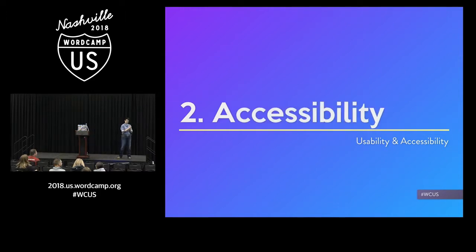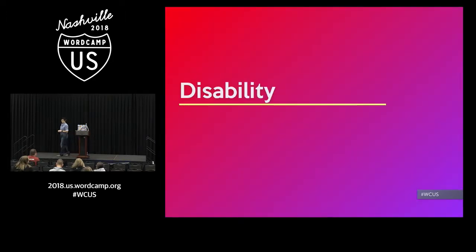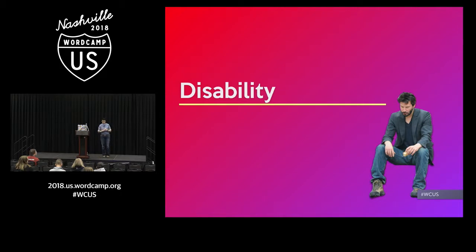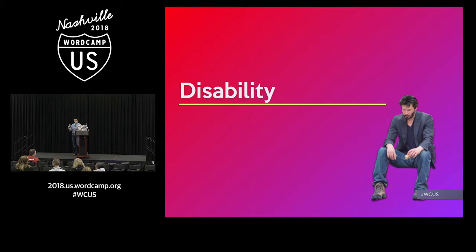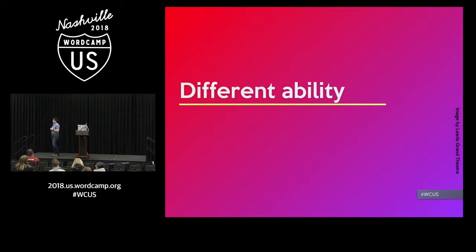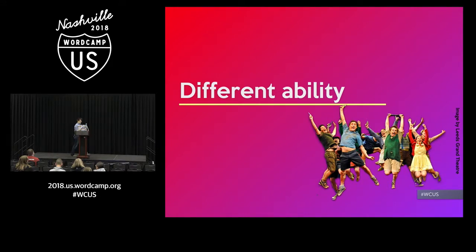Accessibility. Now, it wouldn't be a Tracy Apps talk without some accessibility talk. We usually hear accessibility in conjunction with the word 'disability' or 'disabled.' We don't like this word because it just creates this otherization — it kind of separates us. It's like, 'Oh well, I'm not disabled, that's a small group over here.' Instead, I propose we reframe our thinking and talk about this as different levels of ability, because that includes all of us — because spoiler alert, accessibility is for all of us.